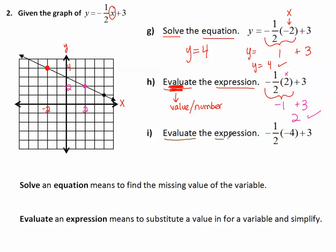Evaluate the expression negative 1 half times negative 4 plus 3. By order of operations, multiplying gives 2, and 2 plus 3 makes 5. Checking with the graph: the x is negative 4, go to negative 4 on the x-axis, up to the graph, and that's at positive 5. So 5 is the correct answer.